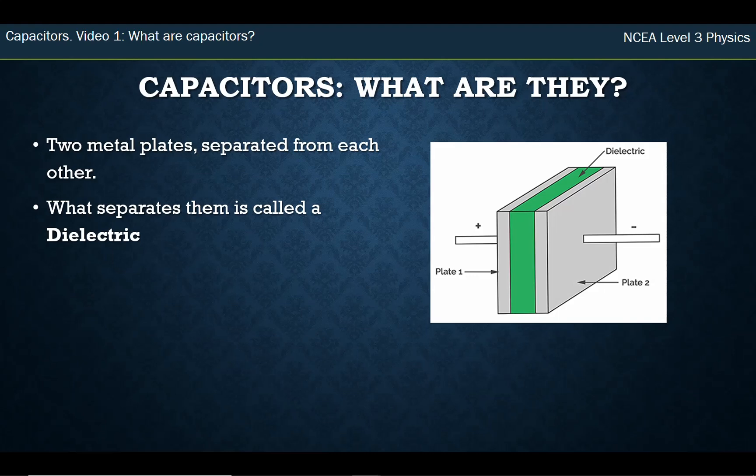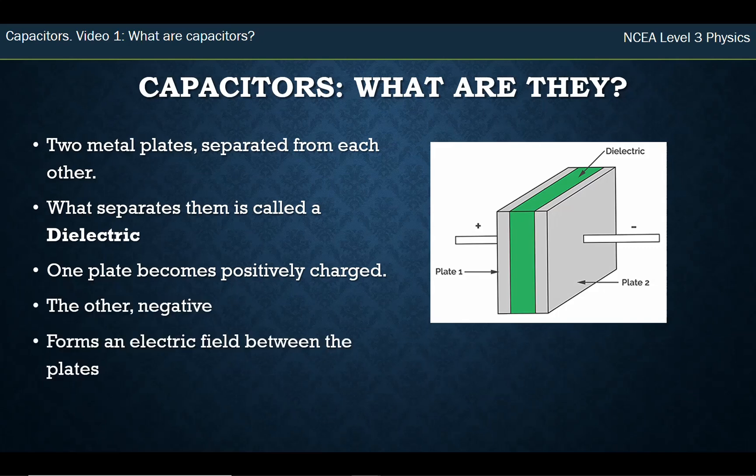What separates them is a dielectric, and that dielectric could be air, it could be a vacuum, or it could be something you put between that doesn't conduct electricity, like plastic. When you apply a voltage source to the two plates, one side becomes positive and one side becomes equally negative. This forms an electric field between the plates, and this is how you store energy in that electric field. That's what the capacitor is.